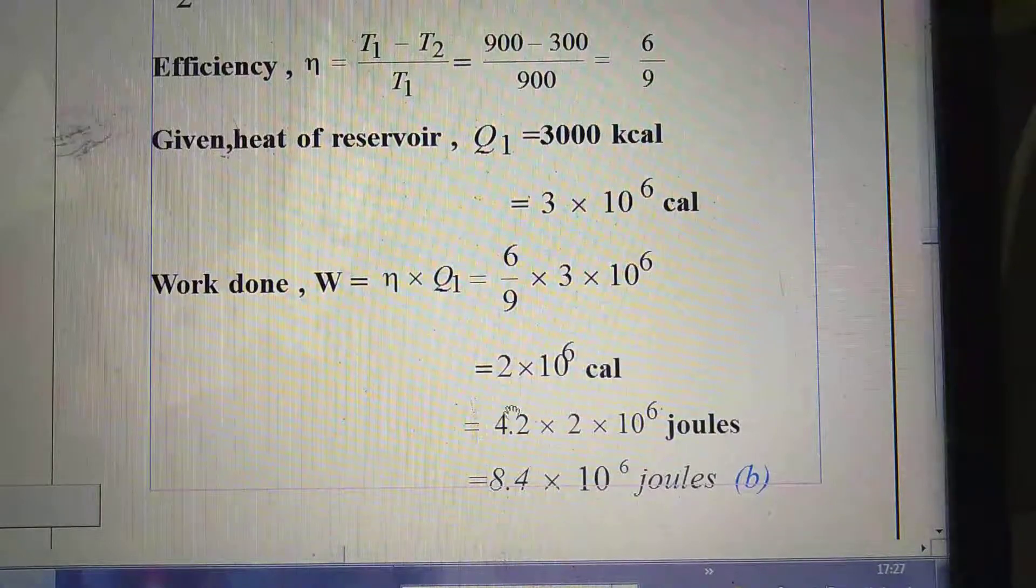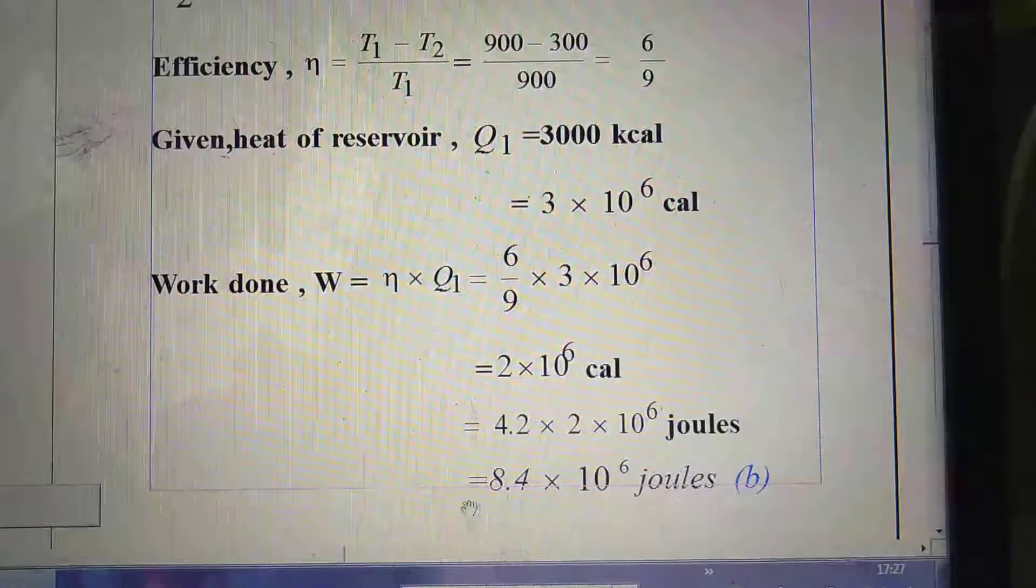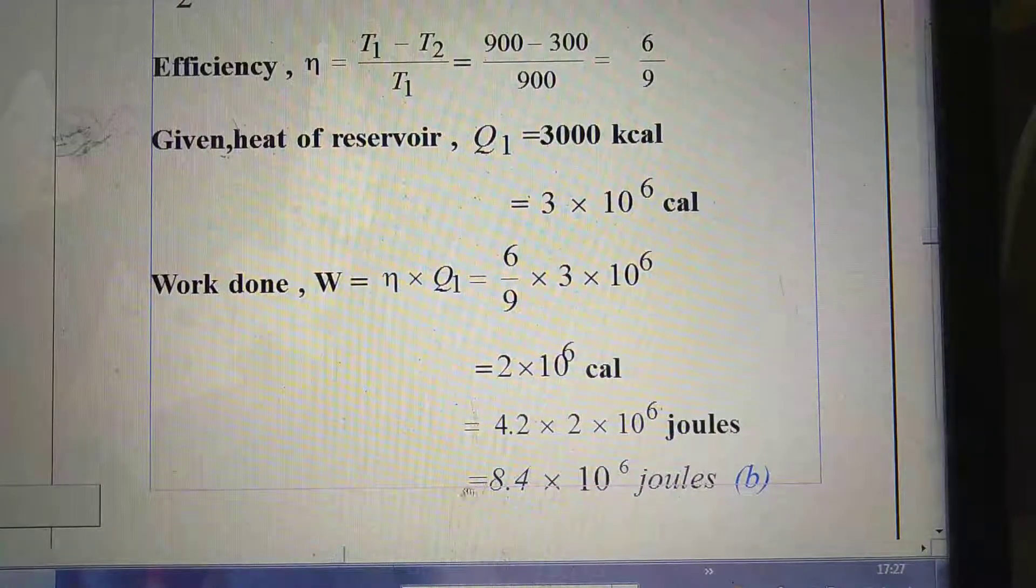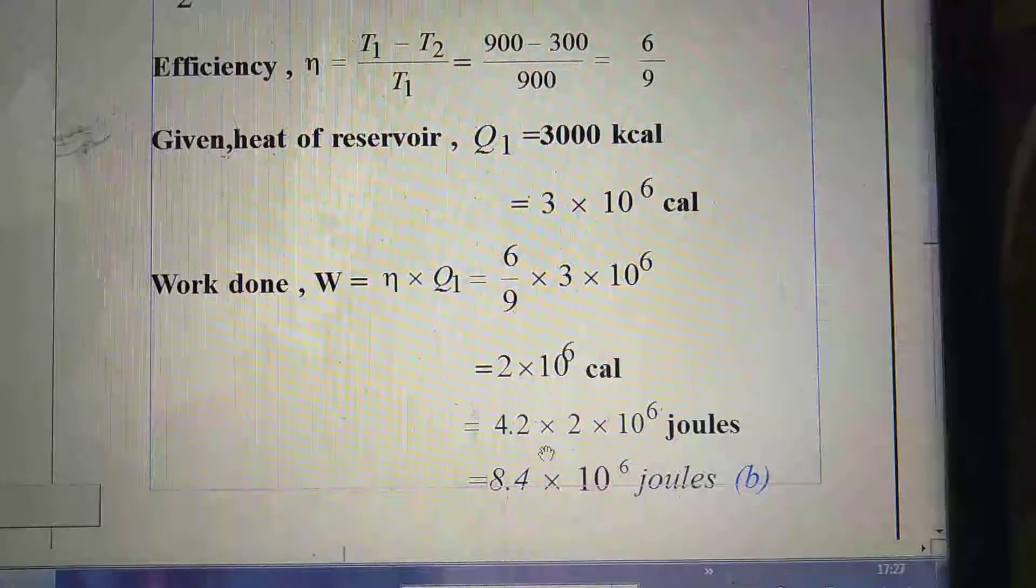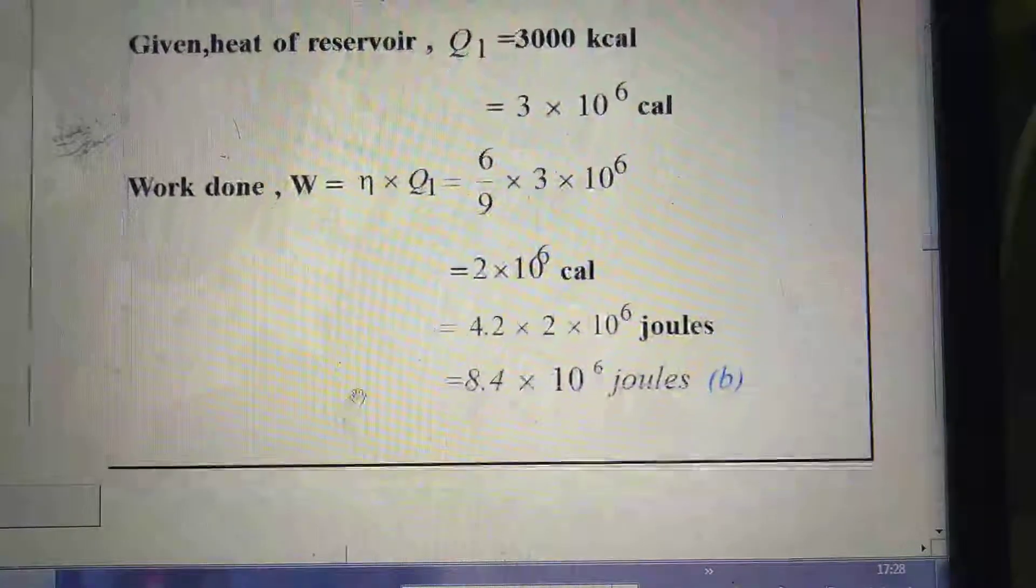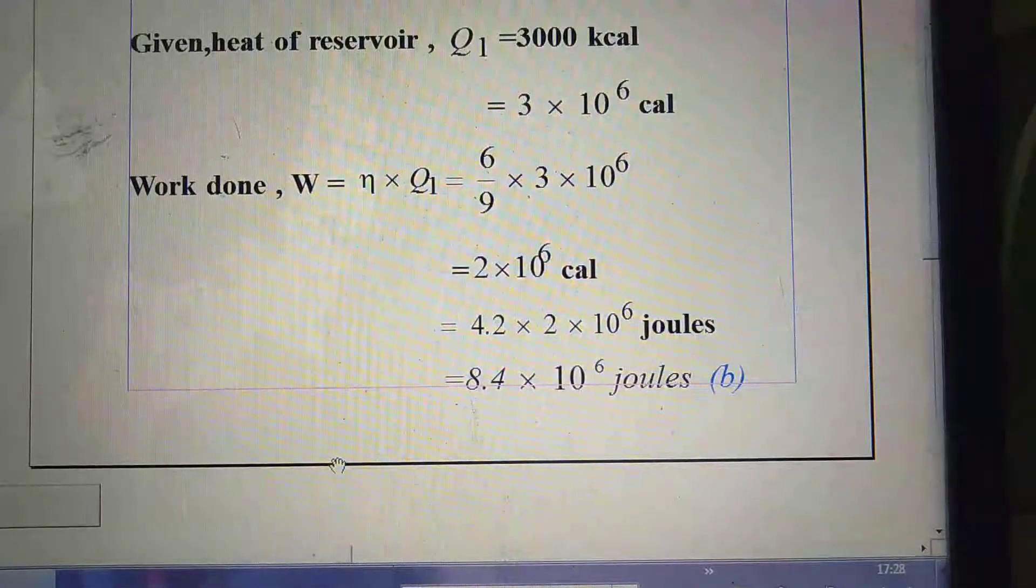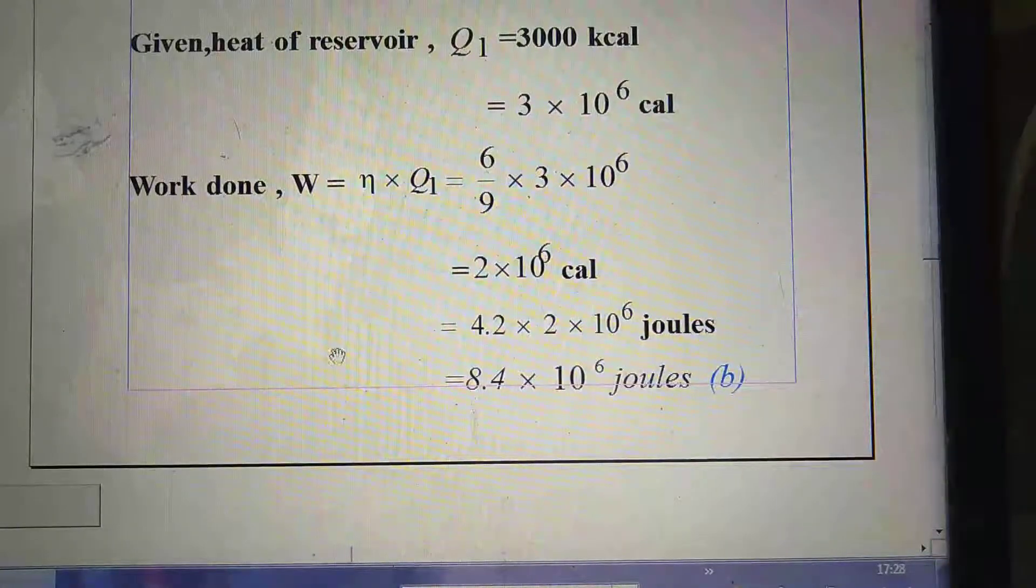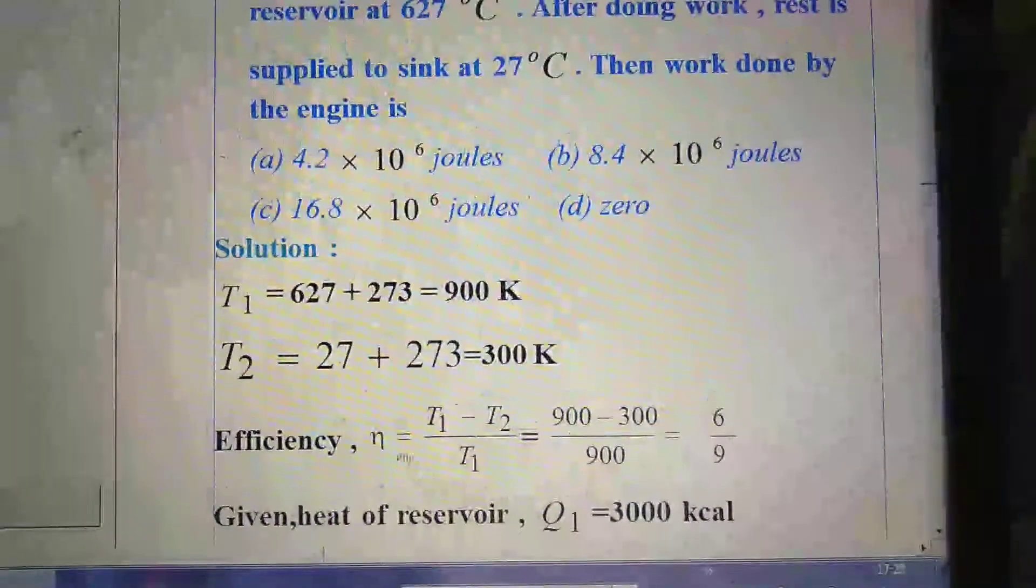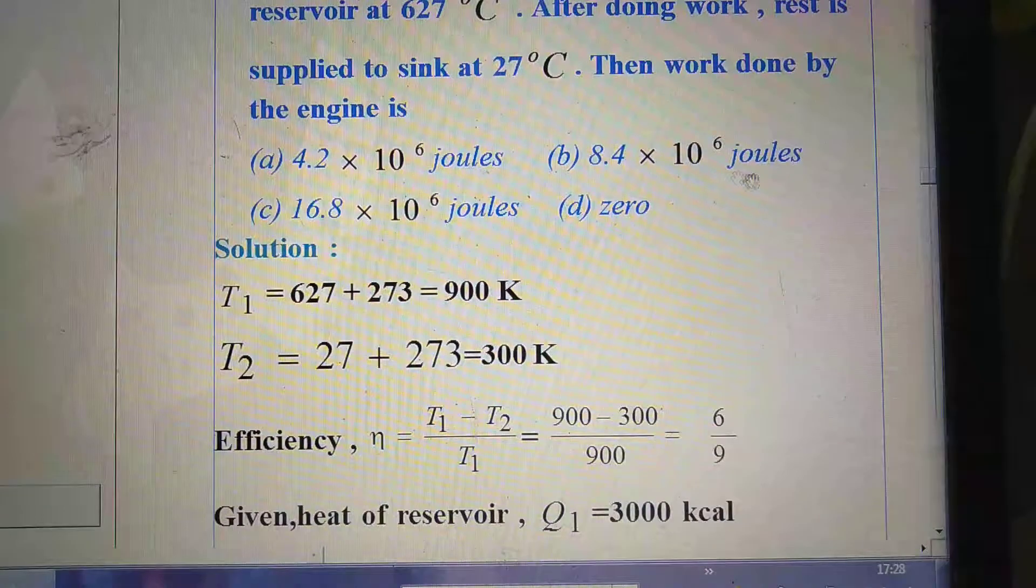As per question, the unit is joule. So we have to convert the calorie into joule. So 1 calorie = 4.2 joule. So after conversion and calculation, we got 8.4 × 10⁶ joule. So right option is B, that is 8.4 × 10⁶ joule.